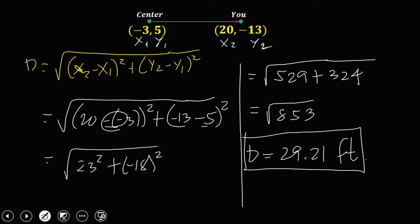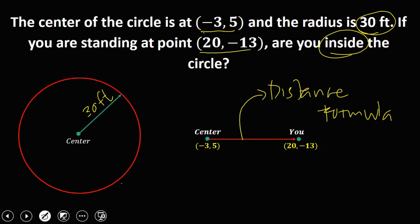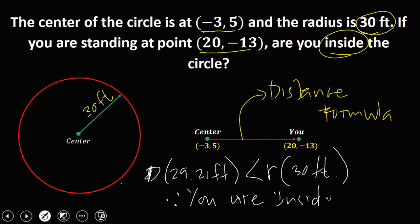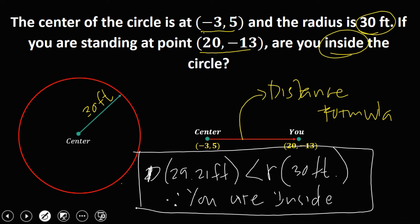Since your distance from the center is only 29.21 feet and the radius is 30 feet, your distance d of 29.21 feet is less than the radius of 30 feet. Therefore, you are inside this circle.